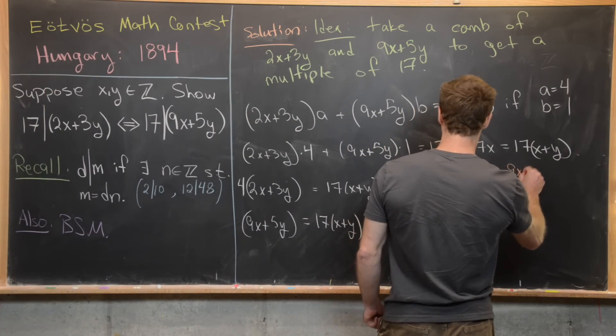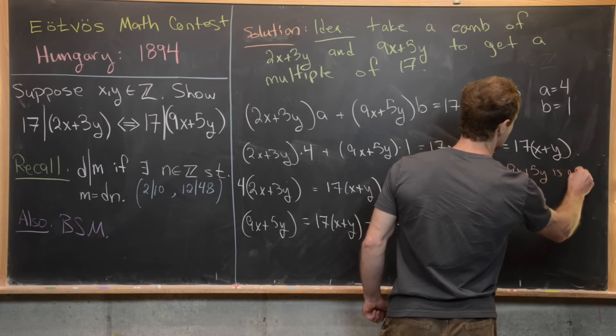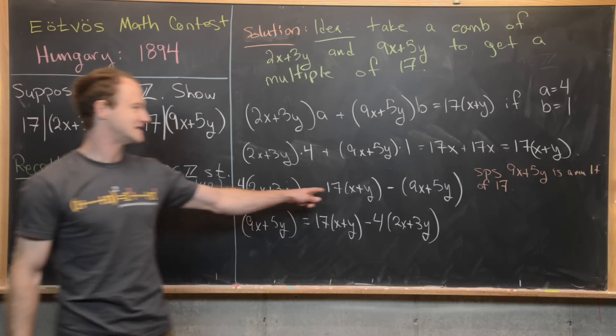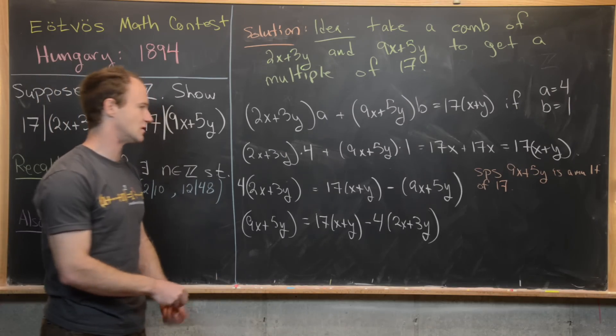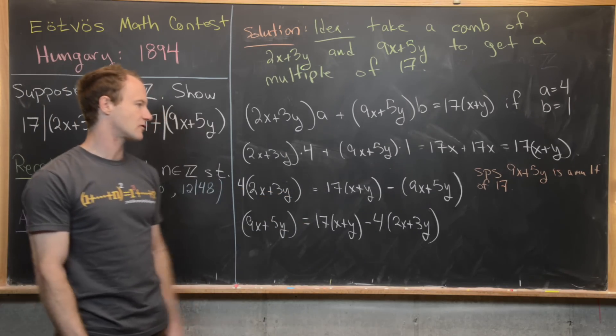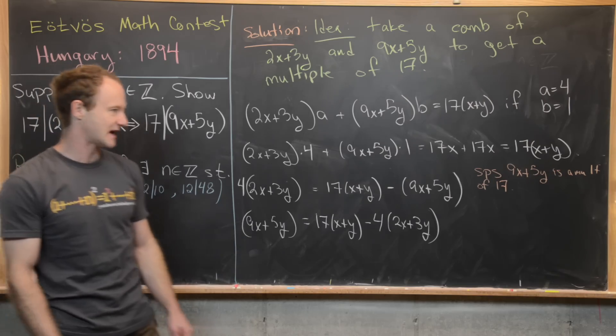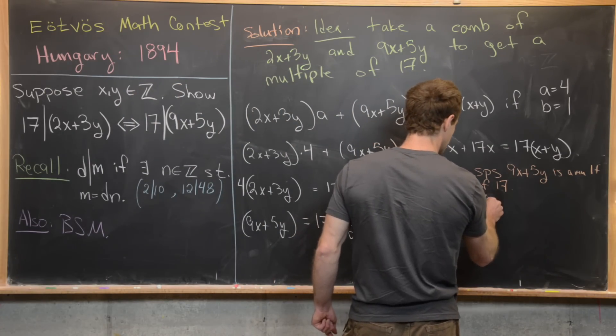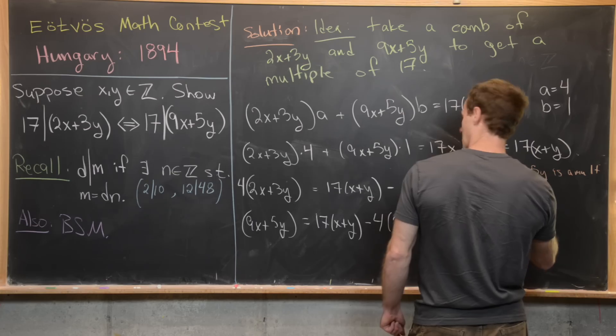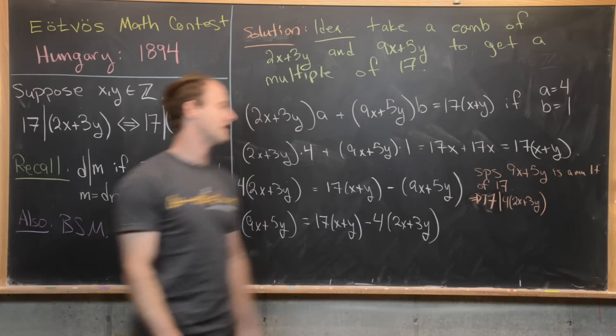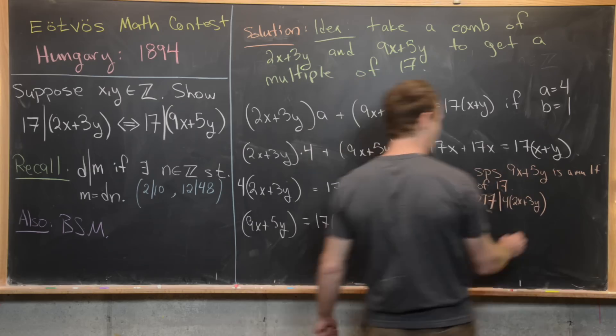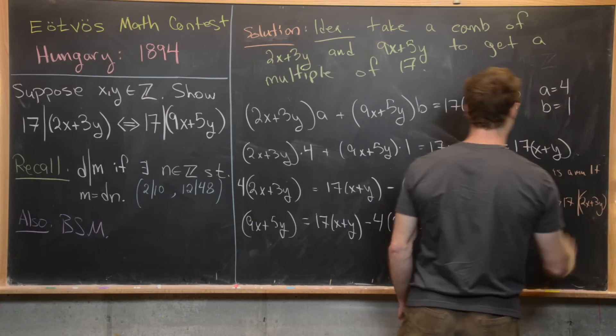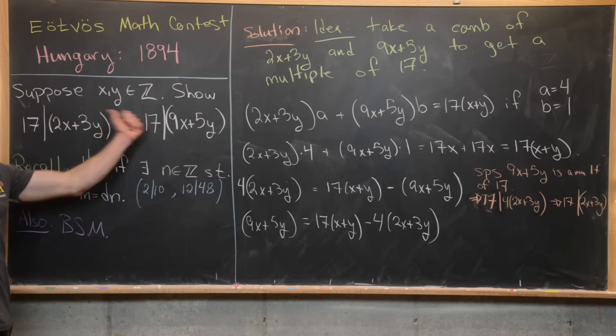So let's maybe look at this one. We can suppose that 9x plus 5y is a multiple of 17. But that means this entire right hand side is a multiple of 17. But if this entire right hand side is a multiple of 17, then the left hand side is a multiple of 17. So in other words, 17 divides 4 times 2x plus 3y. But then given the fact that 17 and 4 are relatively prime, it easily follows that 17 divides 2x plus 3y as needed. So that would be the reverse direction going this way.